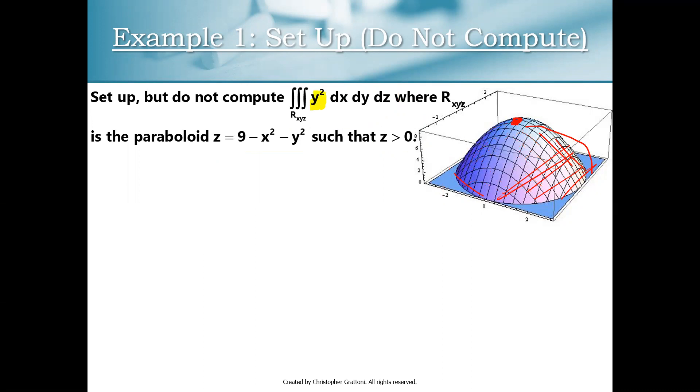The first iteration of this problem asks us to set up but do not compute. So we have a directive here that's telling us to set up this triple integral but don't actually run the numbers. So in that case we don't really need to change to any sort of new coordinate space.